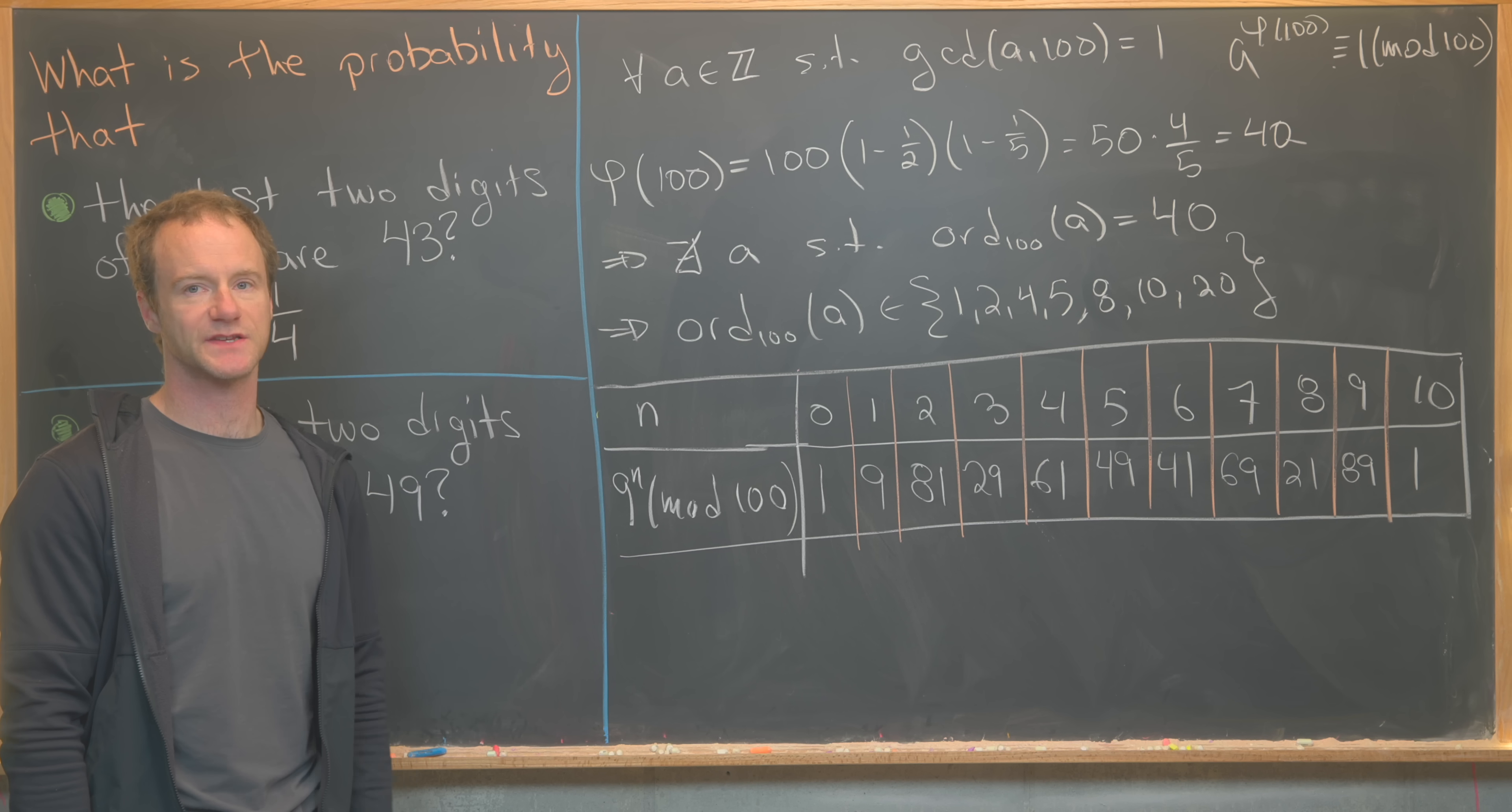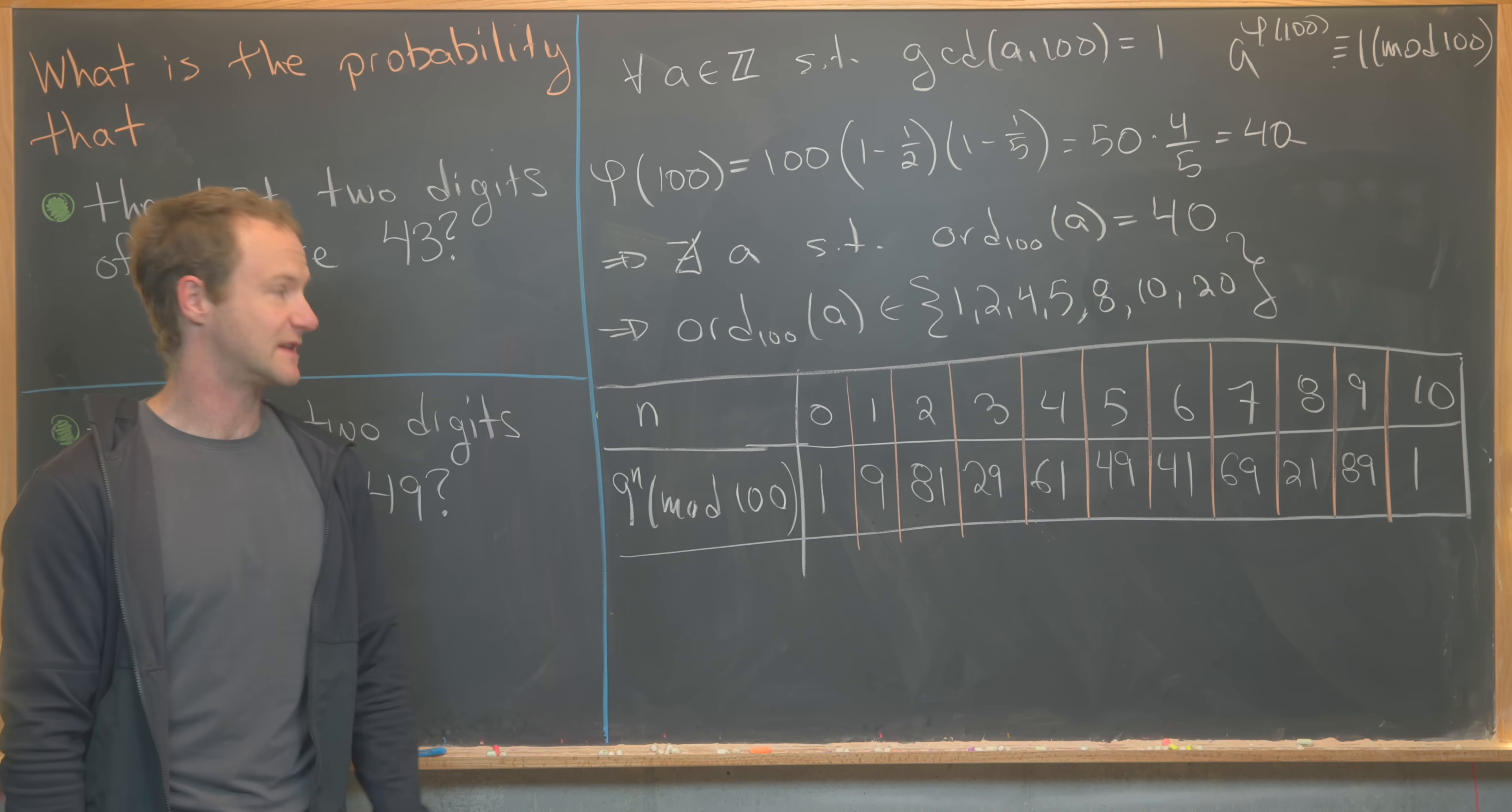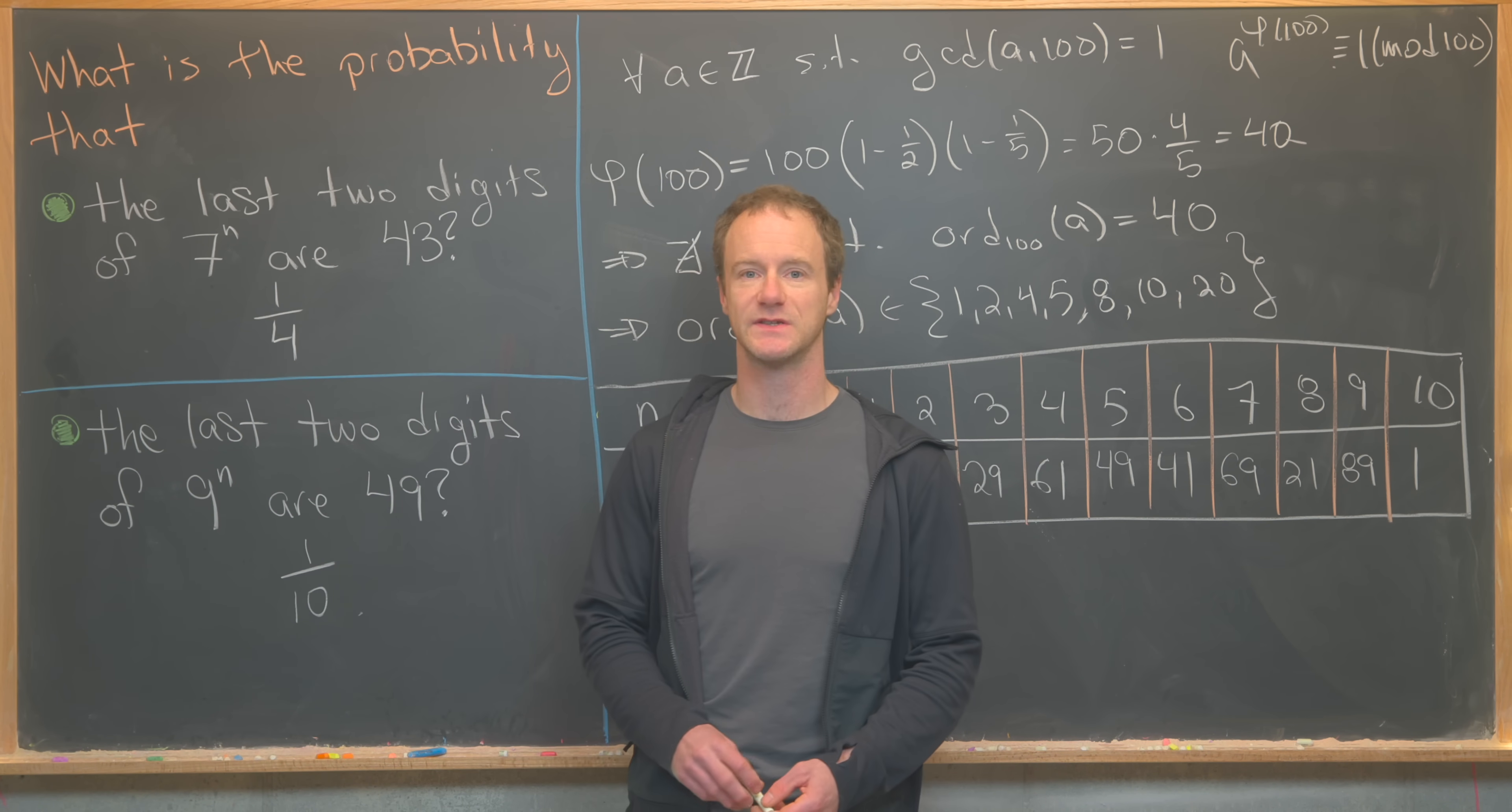So after making all of the necessary calculations, we see that 9 to the n mod 100 can take on 10 different values. So 9 to the 0 is clearly 1, and then we go 9, 81, 29, 61, 49, 41, 69, 21, 89, and 1 again. And so that would be the 10th power, and then it'll repeat after that 10th power. So again, we get a total of 10 numbers from this output. Now we just have to look, is 49 one of our numbers? And it is, which tells us that this probability is 1 over 10. And that's a good place to stop.